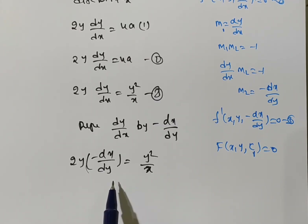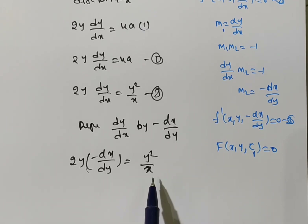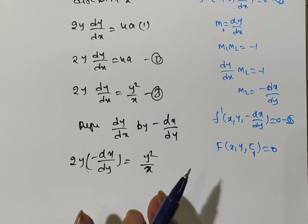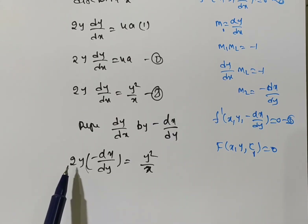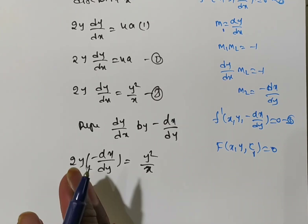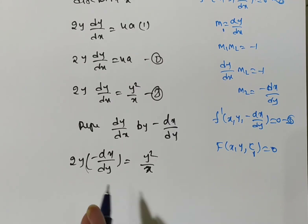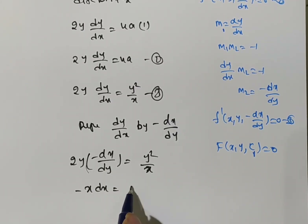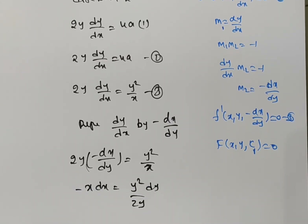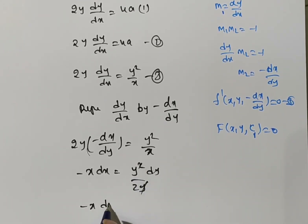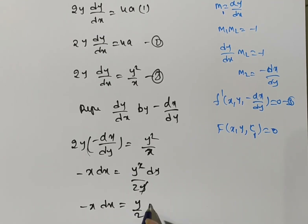Using the variable separable method, we separate x terms with dx on one side and y terms with dy on the other side. This gives -x dx = (y²/2y) dy. The y² and y cancel, so we get -x dx = (y/2) dy.